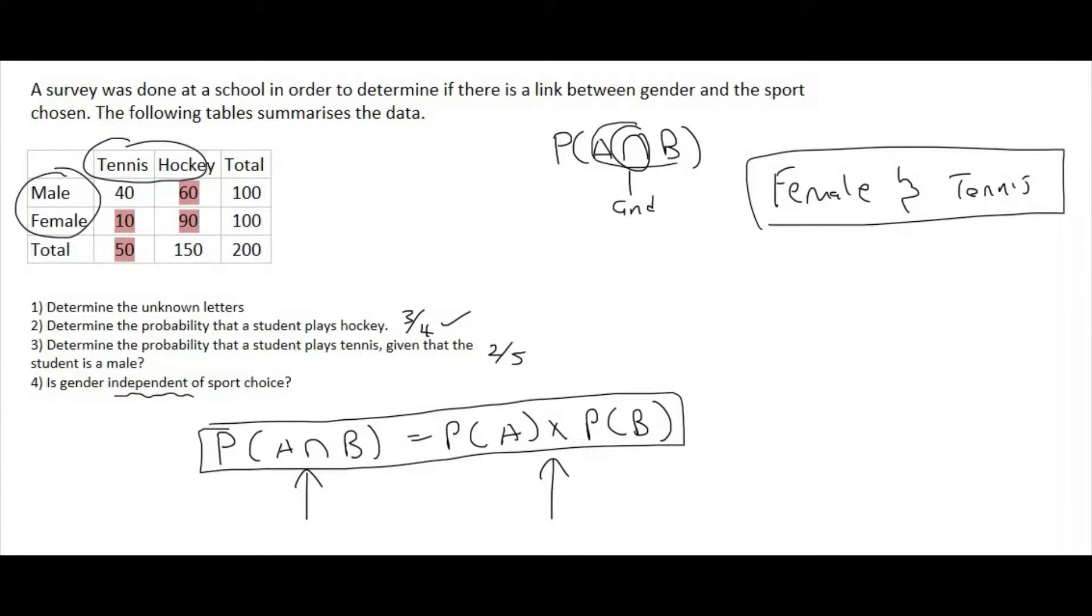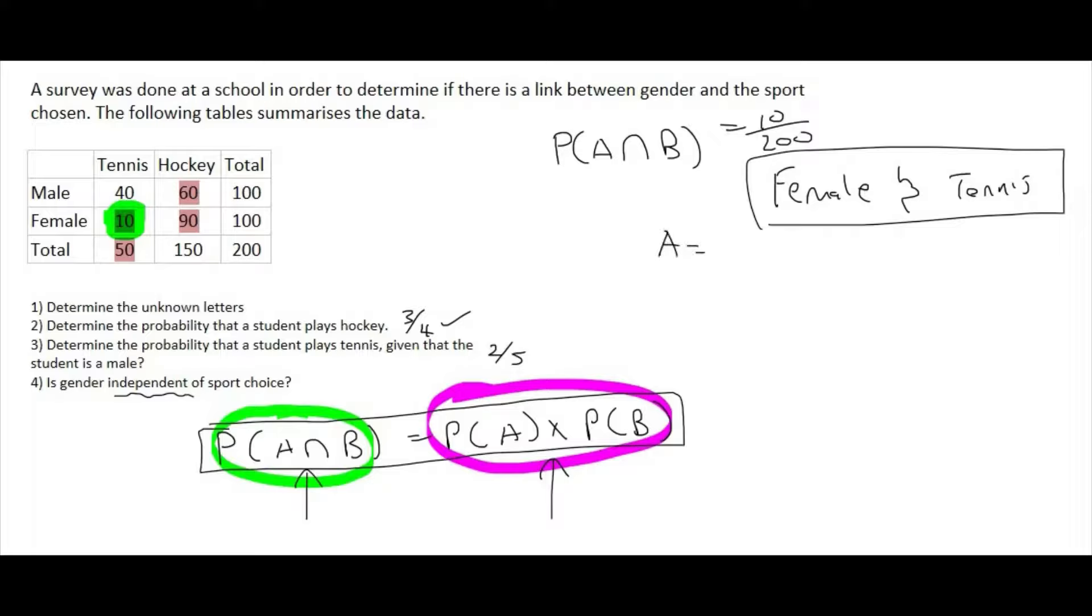So where are the people who are female and play tennis? So females who play tennis would be this column over here or that number over there, because they are in the tennis column and they are also female. So there are 10 people out of a total of 200. Okay, so that's this part of the formula now complete.